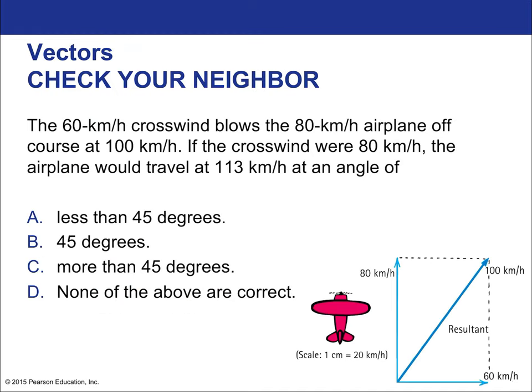Let's look at velocity vectors. We introduced the idea of vectors using the Pythagorean theorem and talked about how it applies to forces. Let's make sure we can use the Pythagorean theorem with a vector that's not pointing on a straight line. We have a 60 kilometer per hour crosswind — that is a velocity — blowing an 80 km/h airplane off course, resulting in 100 kilometers per hour.